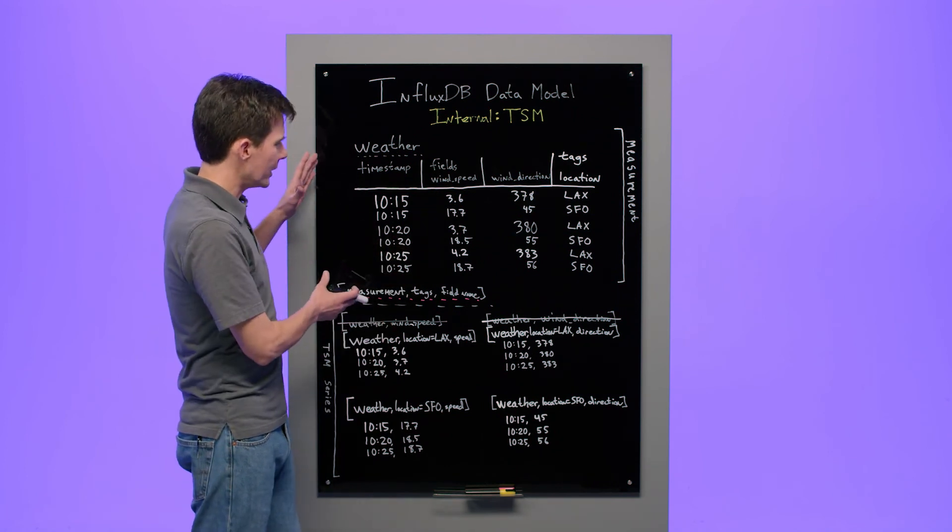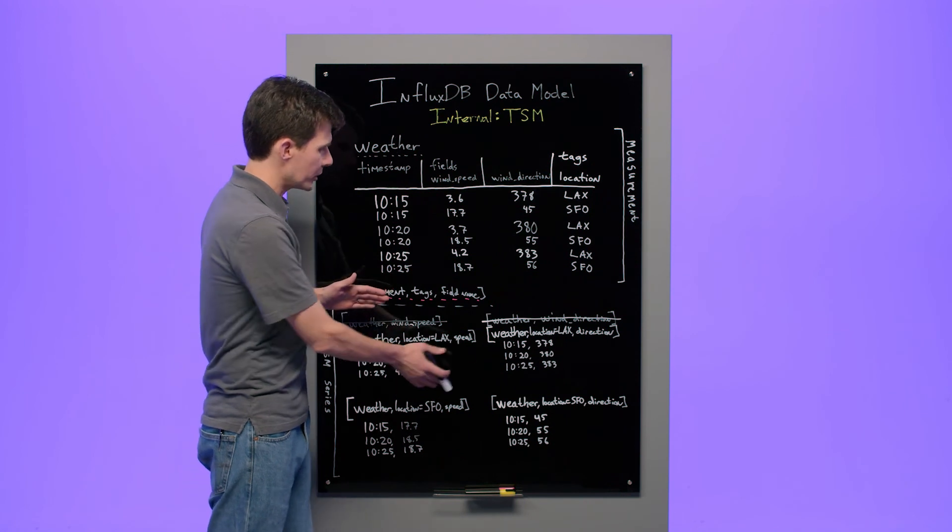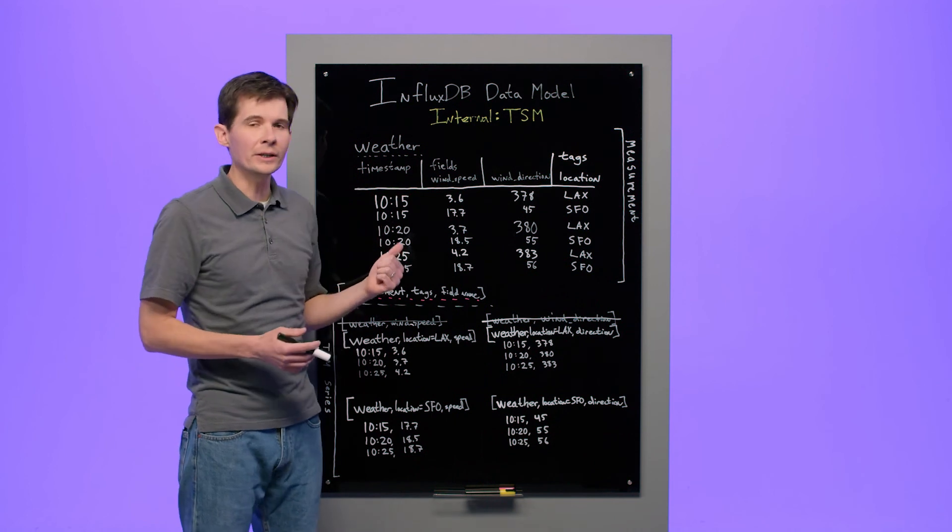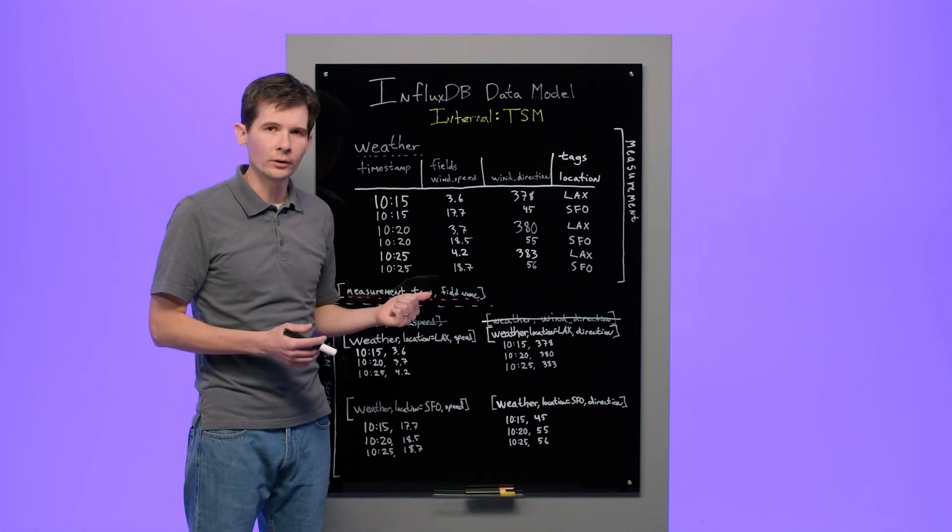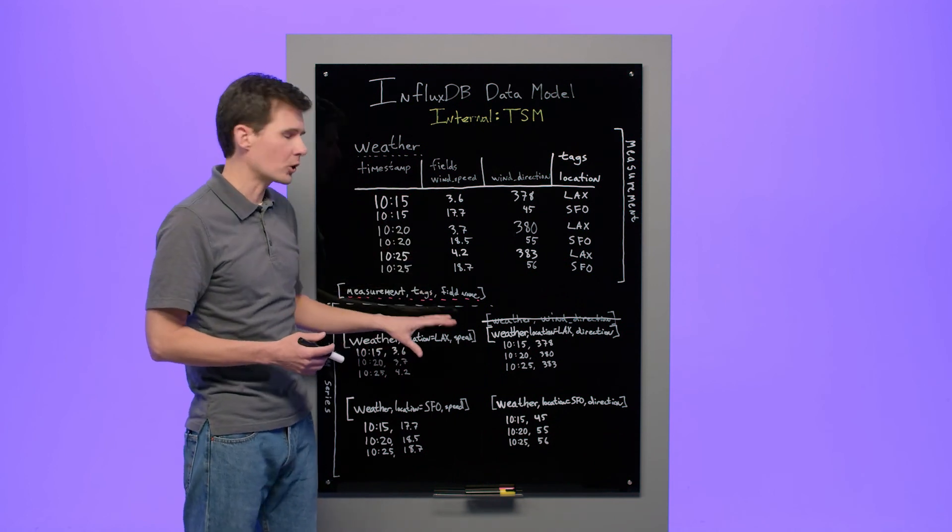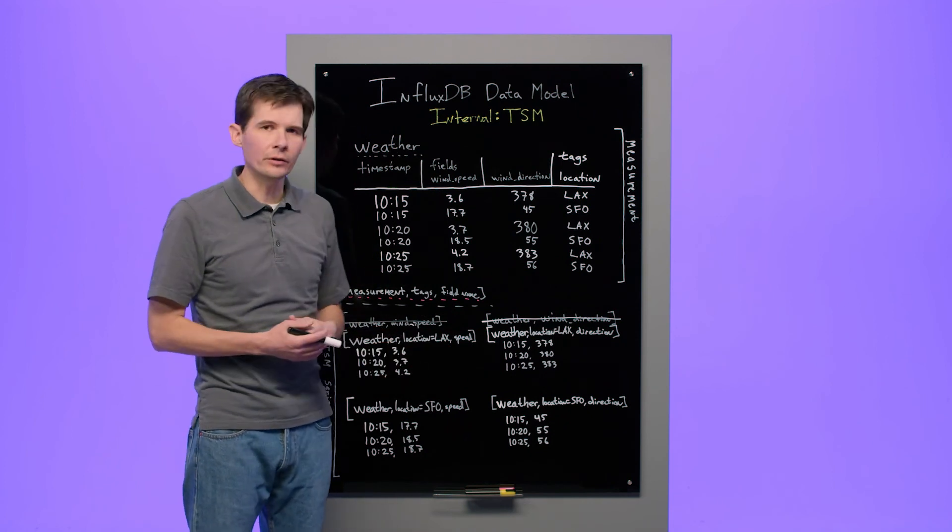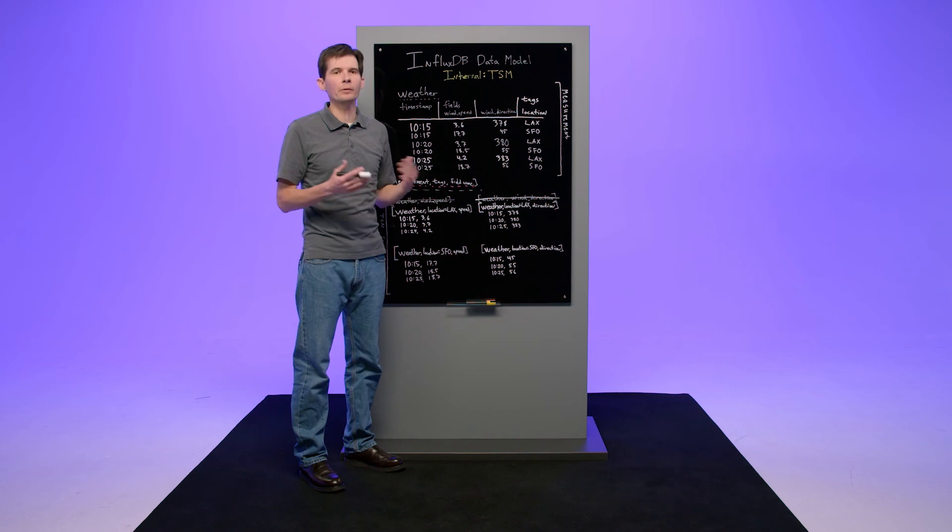Now in this data set, we have four series before we had two series. So before we would have said that this data has cardinality two. And now we'll say that this data has cardinality four, because there are four TSM series. So the quantity of series is something we refer to as cardinality.